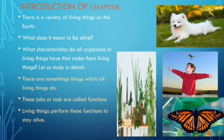Introduction of the chapter: there is a variety of living things on earth. Here in the picture you see a dog, here you see a child which is a human being, and here you see plants. What does it mean to be alive? What characteristics do all living organisms have that make them living things? Let us study in detail.